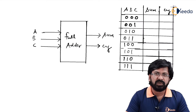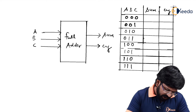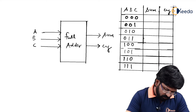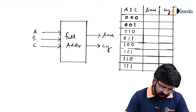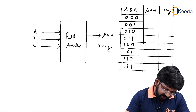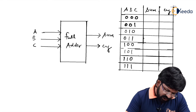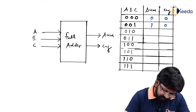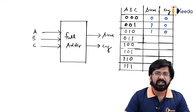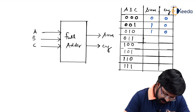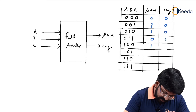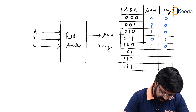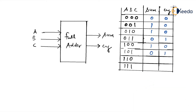To implement a full adder, first of all we should know the full adder thoroughly. For full adder, A, B, C are inputs and sum and carry are outputs. For all possible combinations of ABC I have written from 000 to 111. When inputs are 000, sum is 0 and carry is 0. For 001, sum is 1, no carry. For 010, sum is 1, no carry. For 011, 1 plus 1 is 0 carry 1, so sum is 0, carry is 1. For 100, sum is 1, carry is 0. For 101, two 1s so sum is 0, carry is 1. For 110, sum is 0, carry is 1. For 111, sum is 1 and carry is 1.